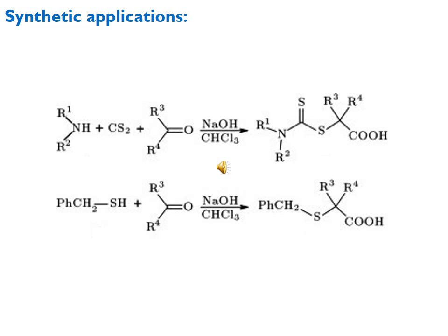Finally, sulfur-containing nucleophiles are also used in the Bargellini reaction. In the first example, carbon disulfide or diethyldithiocarbamic acid reacts with aniline and acetone to give the product. In the second example, a mercapto/thiol group acts as nucleophile, reacting with ketone to give a thioether product. This demonstrates that sulfur, like oxygen and nitrogen, can act as a nucleophile in the Bargellini reaction.